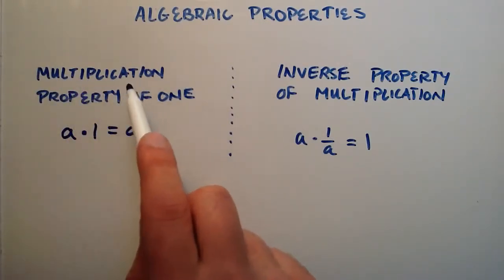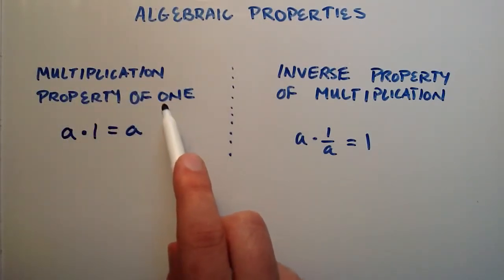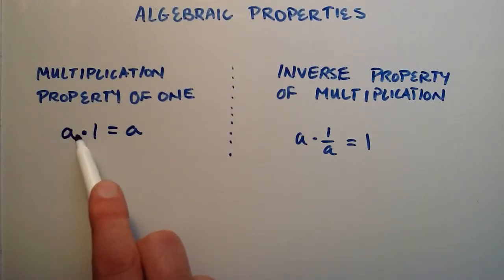And the first property is the multiplication property of 1. And it simply tells us that any number multiplied by the number 1 is equal to the number we started with.